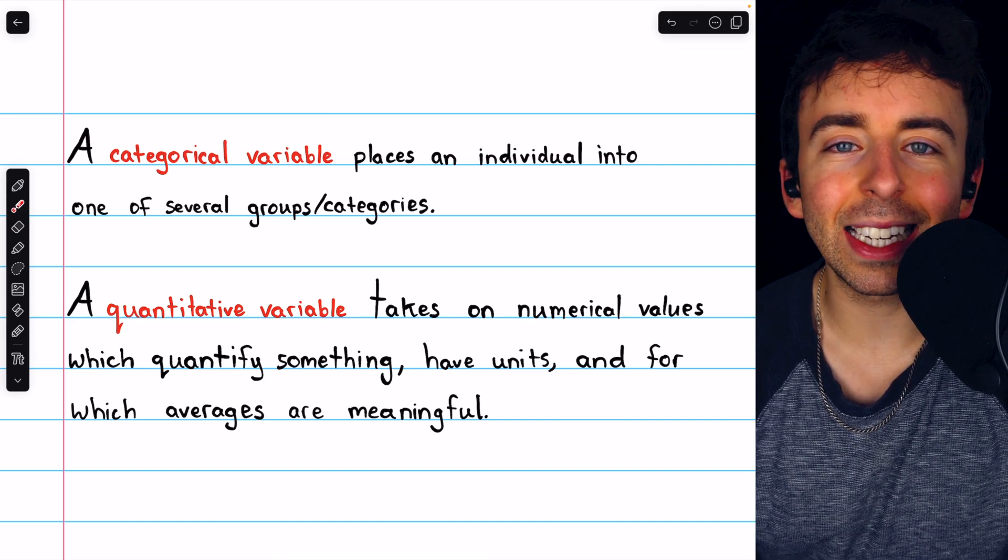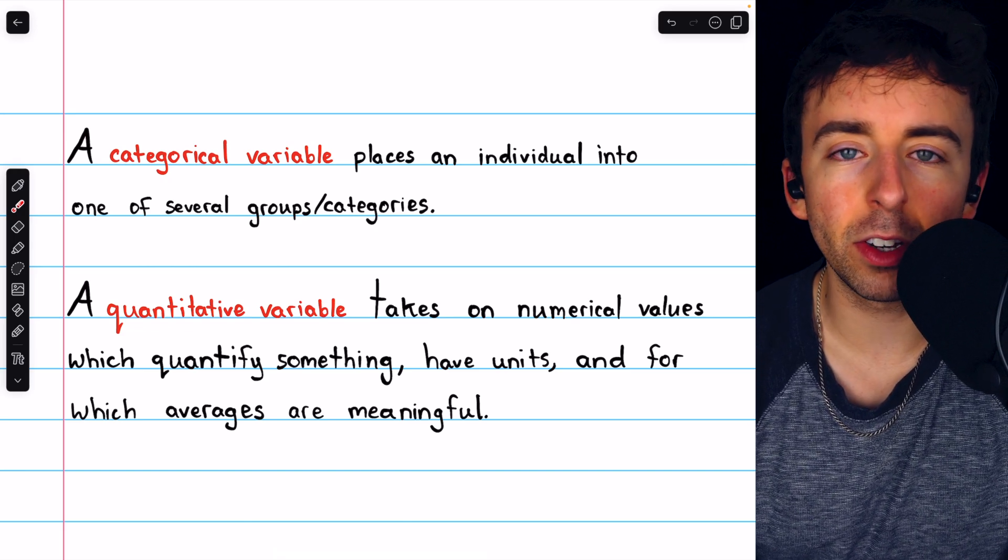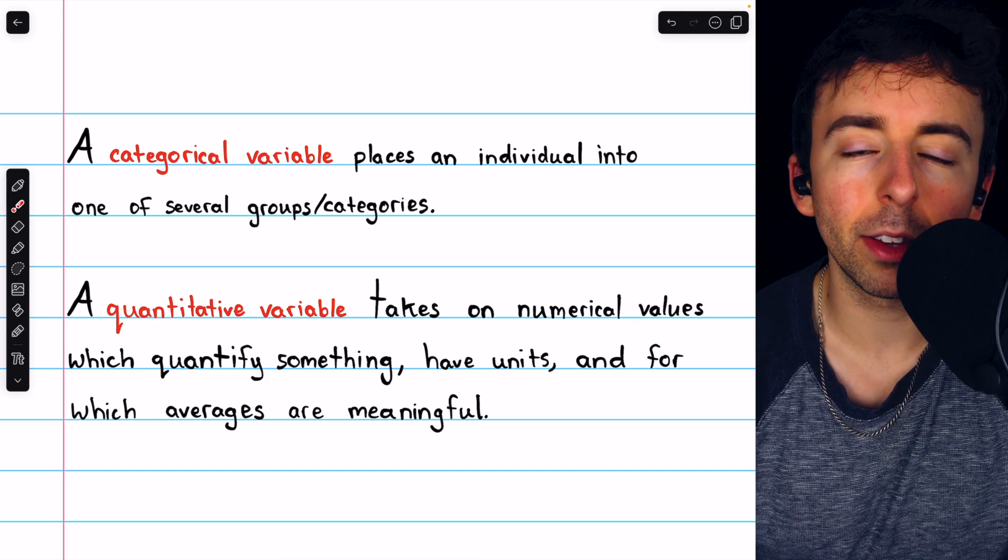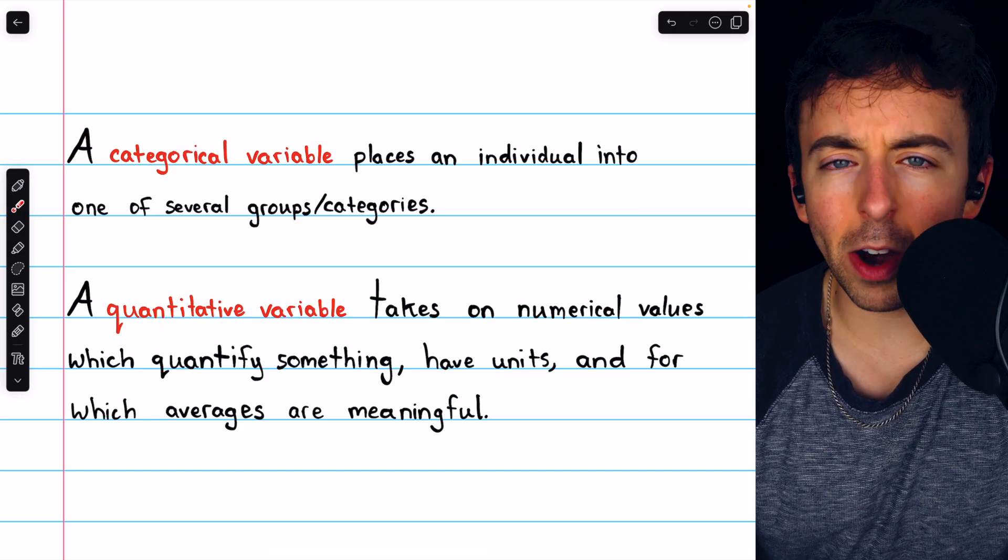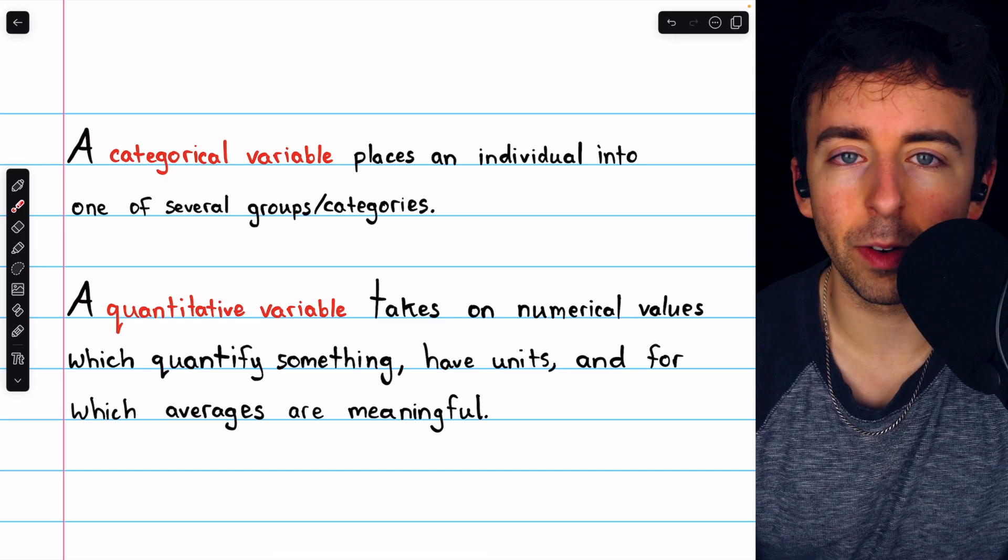As we've discussed, when we collect data, we're collecting variable values for a set of individuals. For example, one variable could be height, and we collect different height measurements for a set of individuals. A variable could be color, and we collect and record the colors of different vehicles.